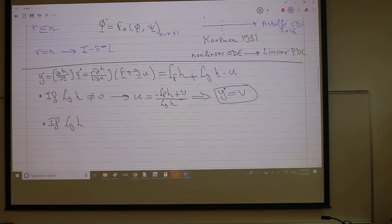So if not, which means L_g h is strictly zero, then I'm going to differentiate again. So here in this case, this is zero. So my output dot, y dot, is just this guy. So y double dot is again the derivative of this guy: L_f^2 h plus L_g L_f h times u.